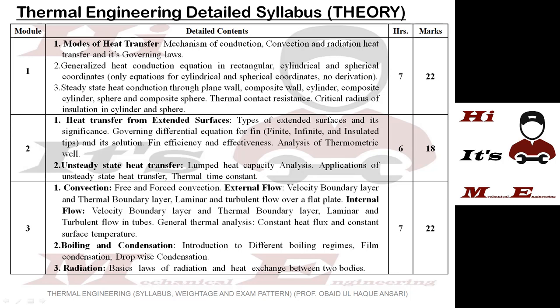Another important derivation in Module 1 is the critical radius of insulation in cylinder or sphere. For numericals, you can expect steady state heat conduction through composite wall, composite cylinder, or composite sphere, and also numericals on thermal contact resistance or critical radius of insulation. The number of hours allotted to this module is 7 and the marks allotted are 22.